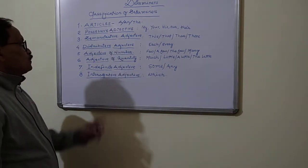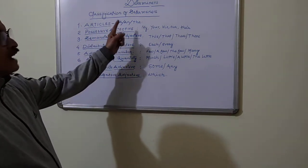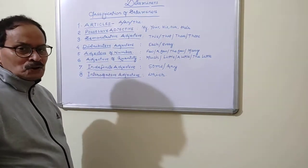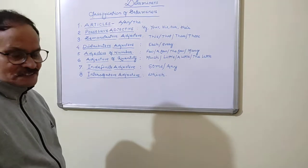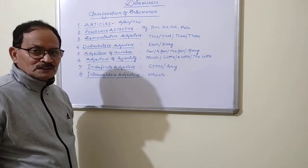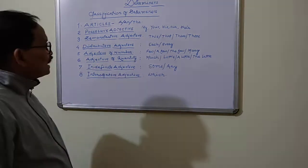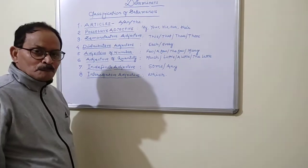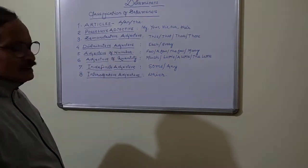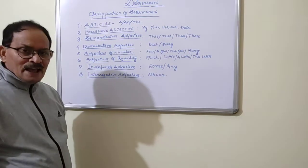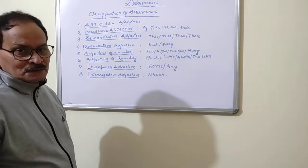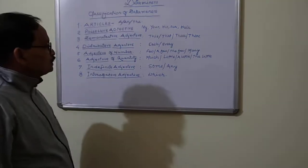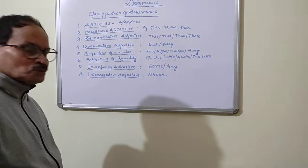Similarly, we use AN and THE. For example, if I say 'he is the boy who has stood first in the class,' then 'boy' is the noun here and the article THE has been used in order to specify the boy. So THE is a definite article as well as a Determiner, because a Determiner is a word which is placed before a noun to specify it or to generalize it.